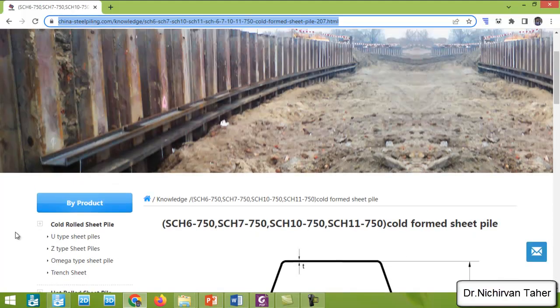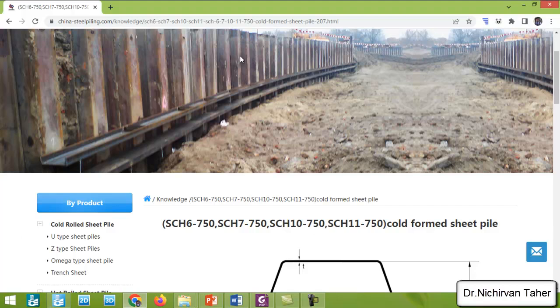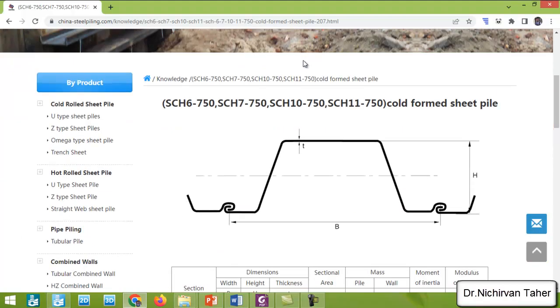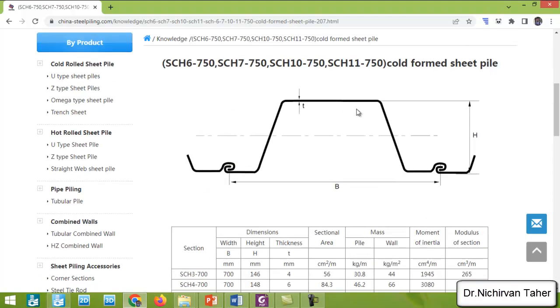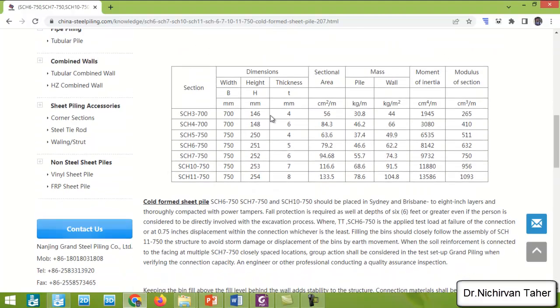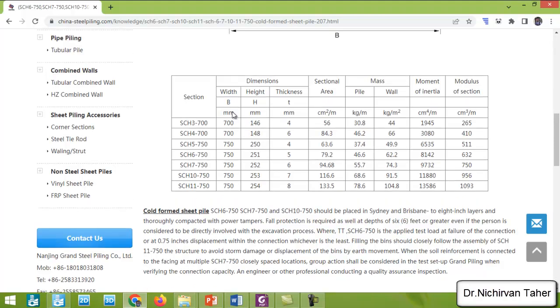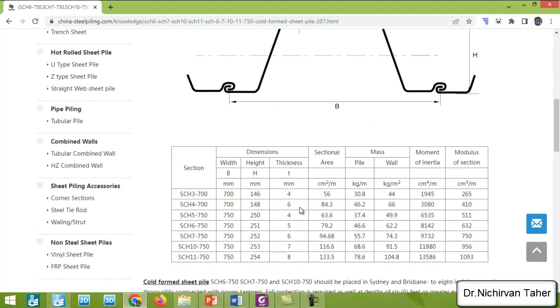You can check this site or any other sites on the internet depending on the country regulation and standards. For example, these are U-shape sheet pile walls. You can see also in here we have height, width, and thickness of sheet pile wall, the cross sectional area, the mass of the sheet pile wall.